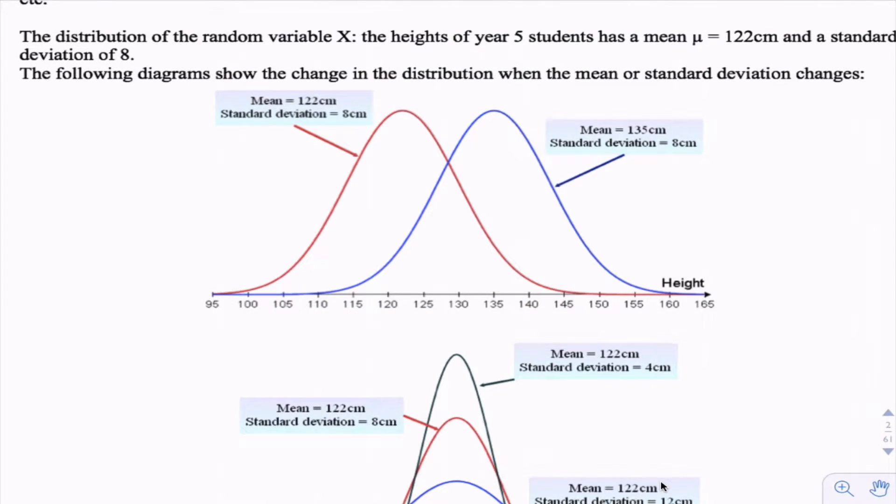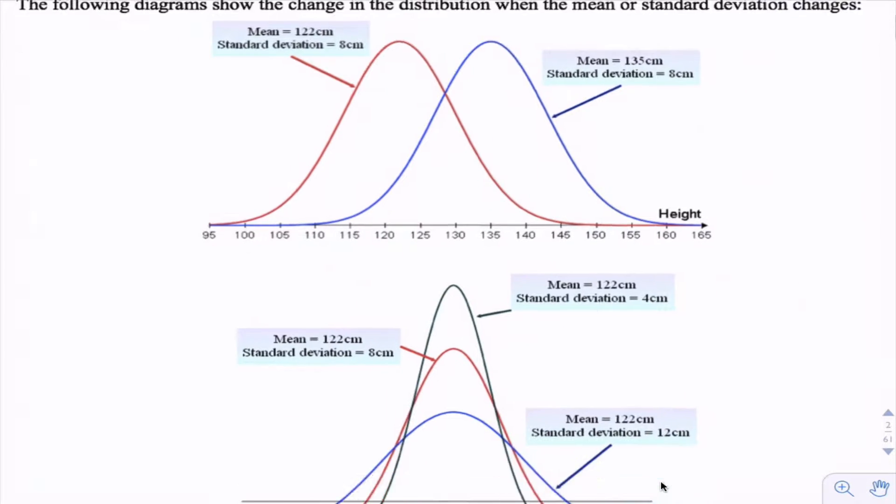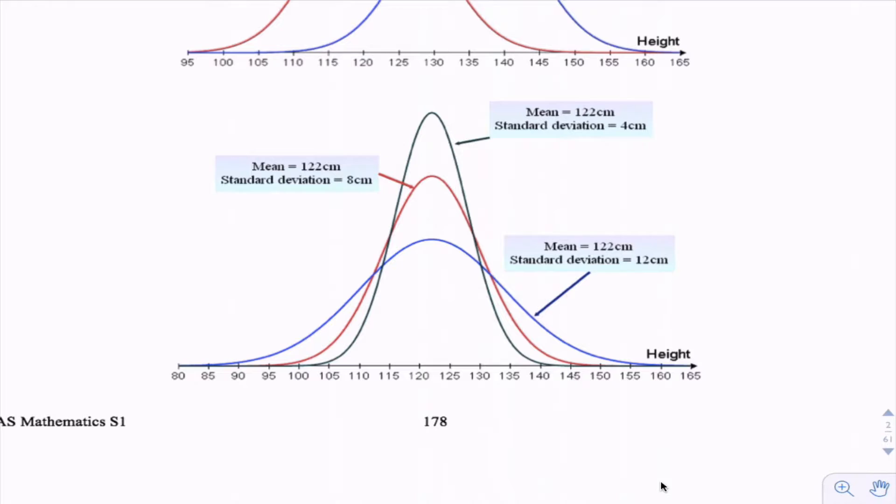Here's an example of distributions that have the same standard deviations but different means. You can see the blue one on the right, the mean is higher than the one in red. And here's some examples of normal distributions where the mean is the same but the standard deviations are different. The blue one has the biggest standard deviation and the black curve has the smaller standard deviation.